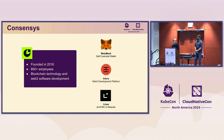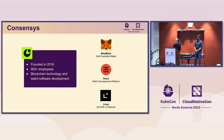A little bit about ConsenSys: it's a blockchain technology and Web3 software development company, founded in 2016, with about 800 employees today. Our main offering is MetaMask, a self-custodial wallet — meaning you own the key — that enables you to connect and interact with Web3 applications. Then we have Infura, a Web3 development platform with APIs and tooling. Our latest offering is Linea, a ZK EVM L2 network that enables scaling on top of Ethereum.